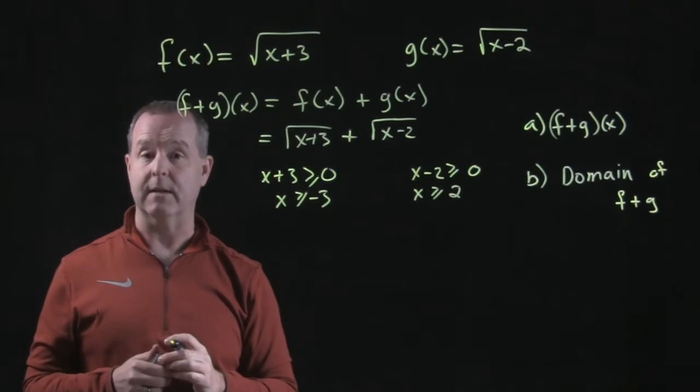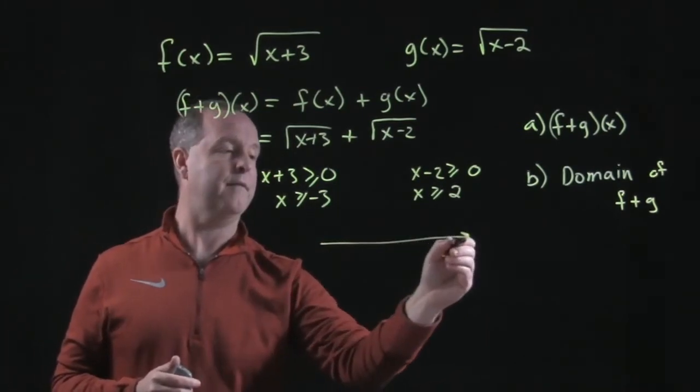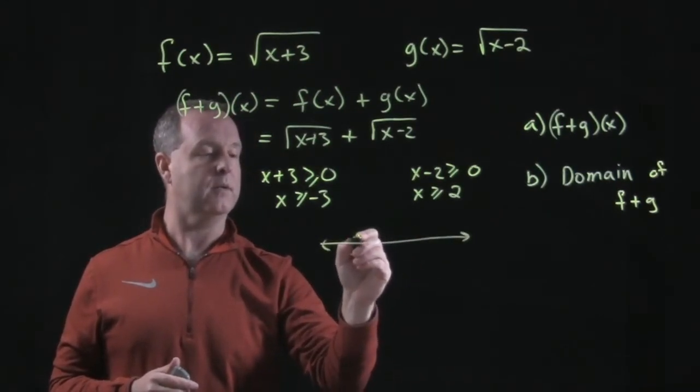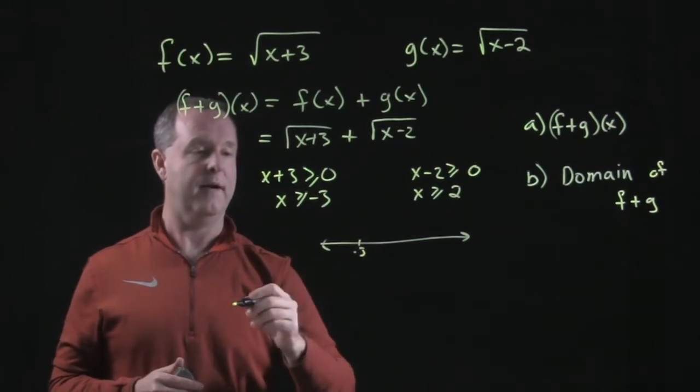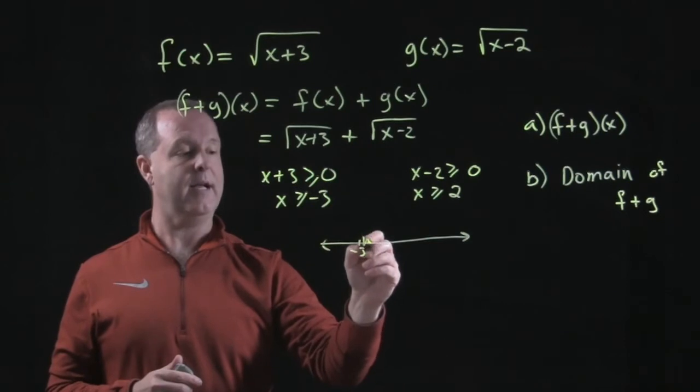Domain of each individual function—what's the domain that's common to both of those? Well, on the number line we would have zero, we have negative three right there, and then all x is greater than negative three.